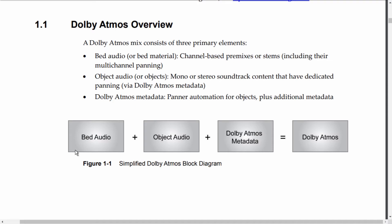Here is a simplified diagram for Dolby Atmos. What is Dolby Atmos metadata? It's the panel automation of objects. What is automation? Automation is the key-framing of object position in 3D space.